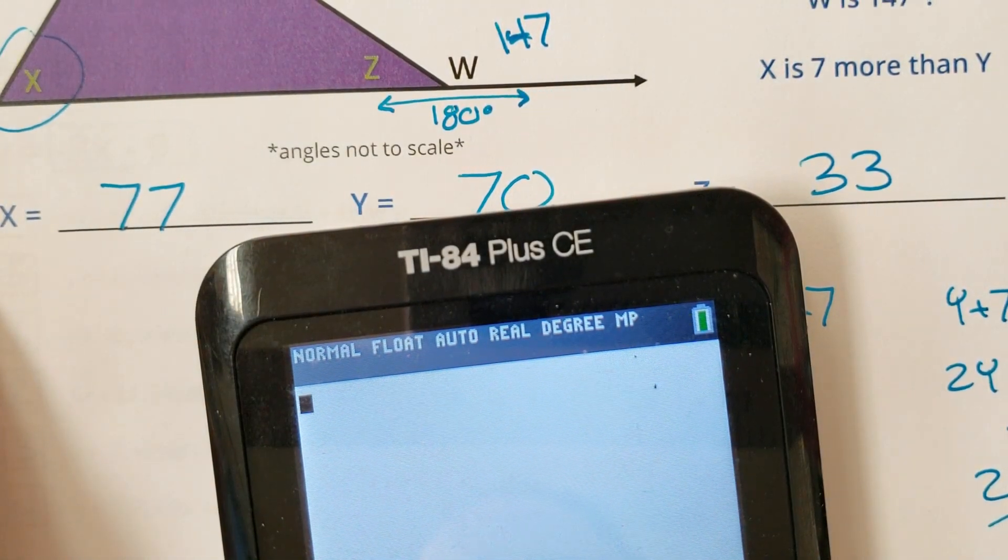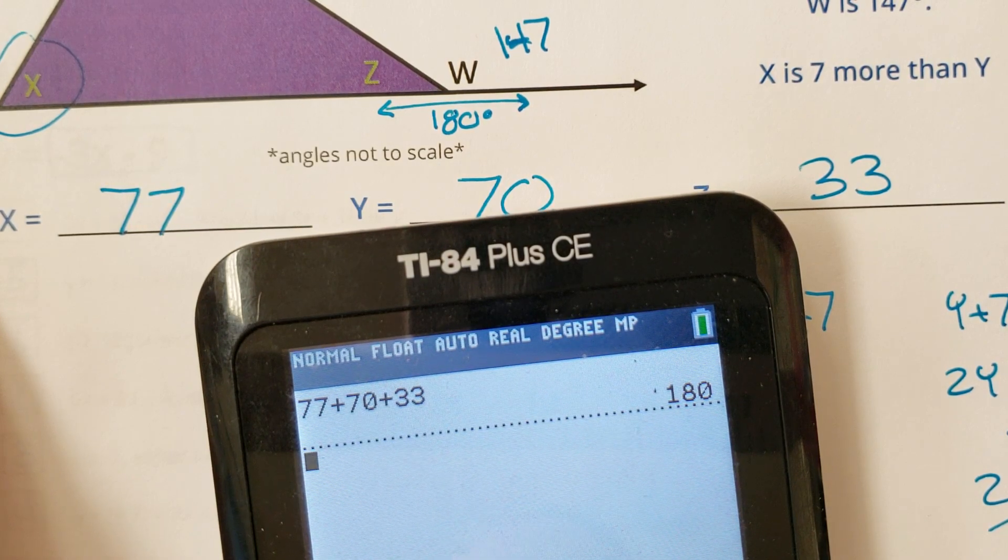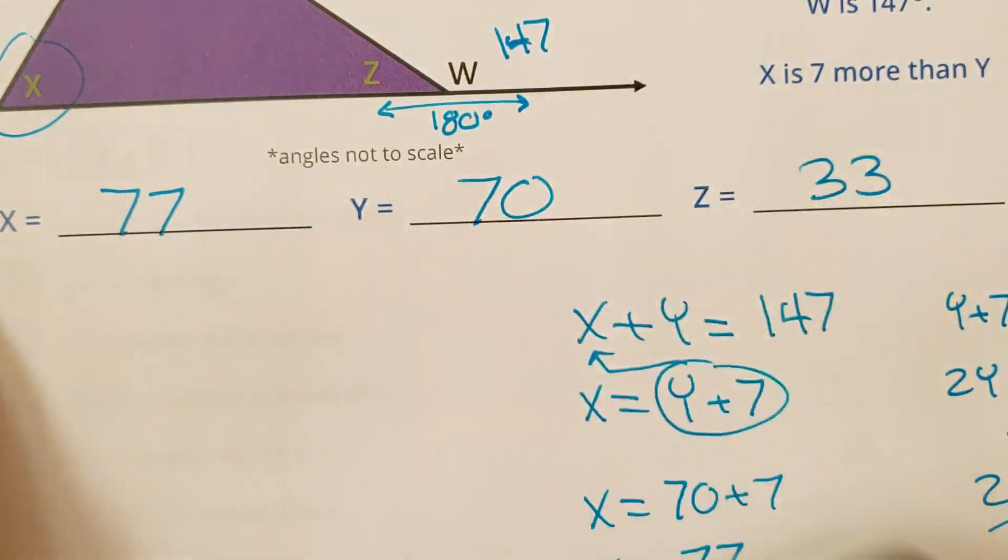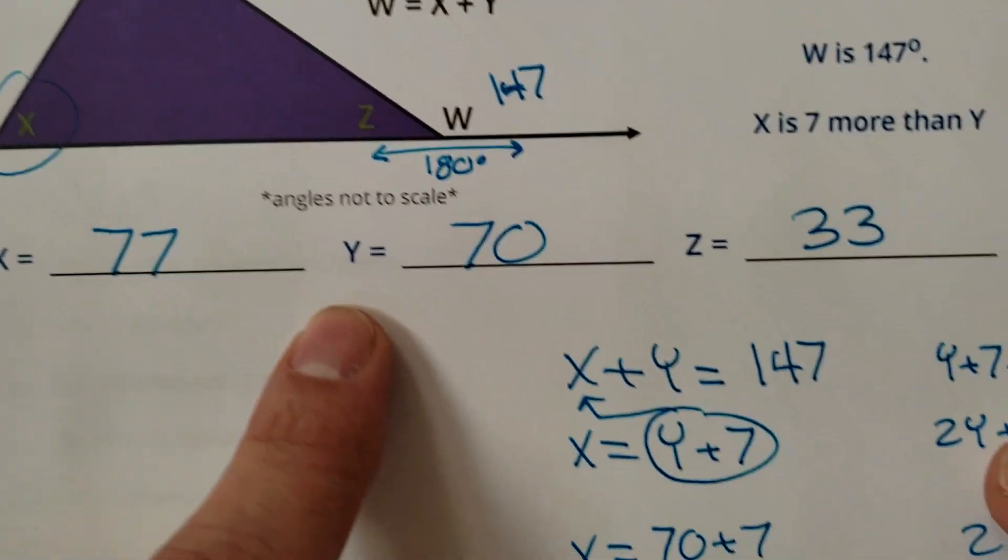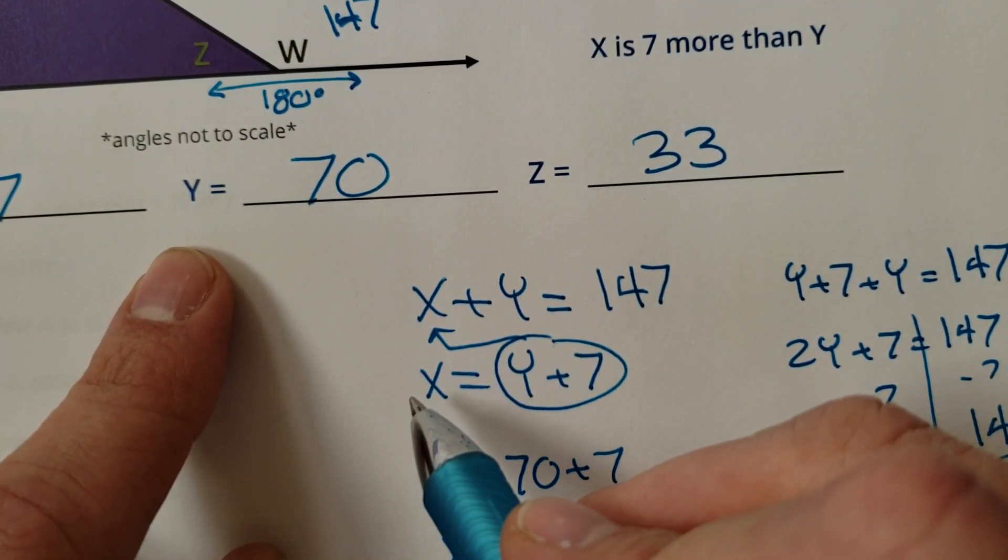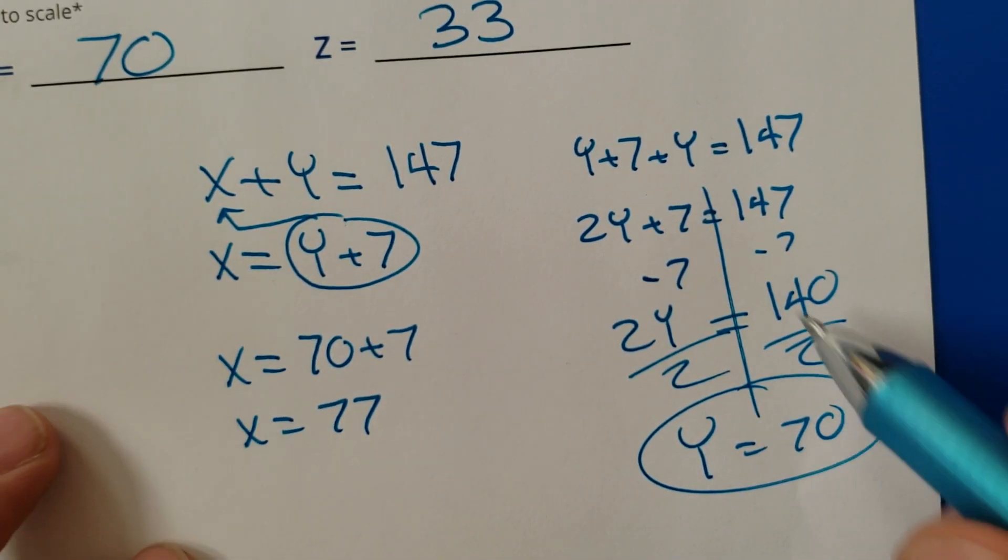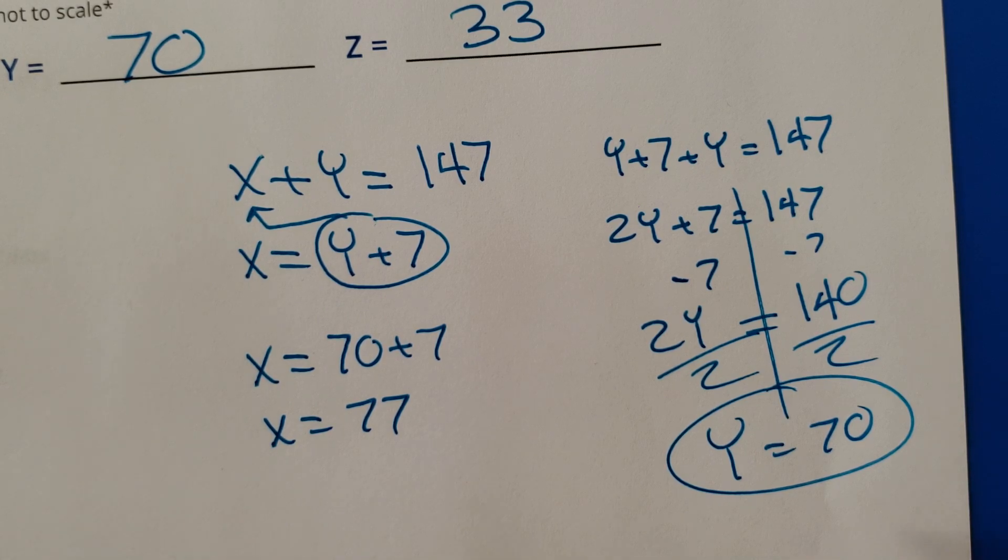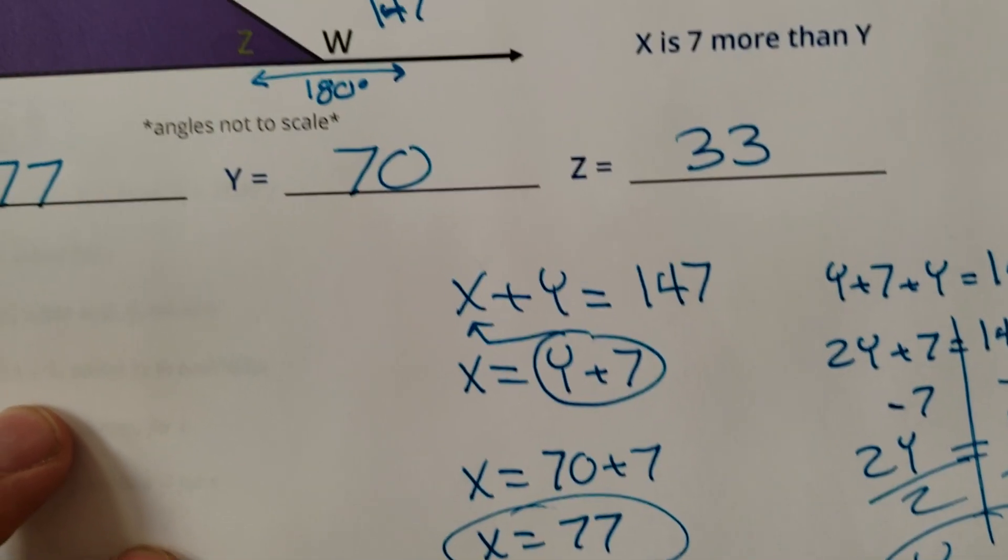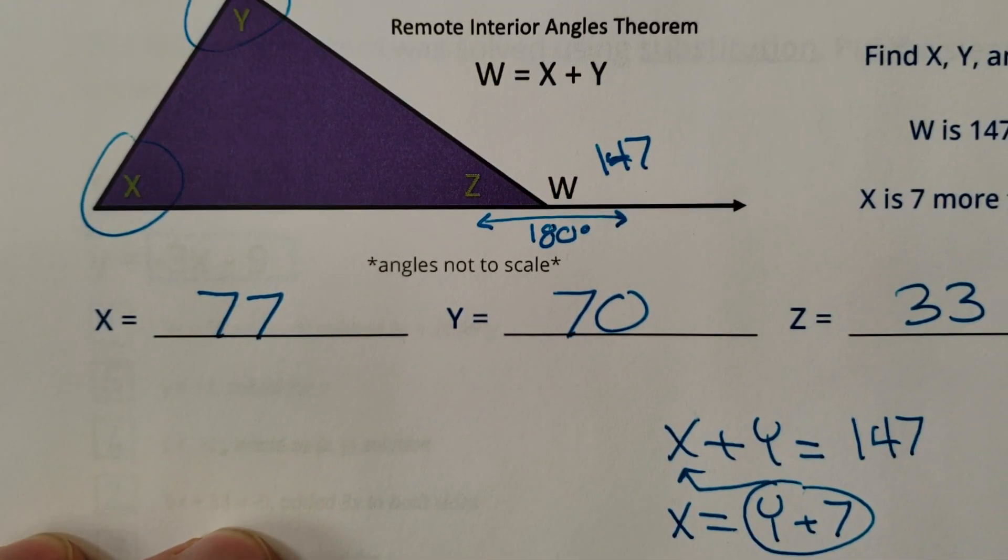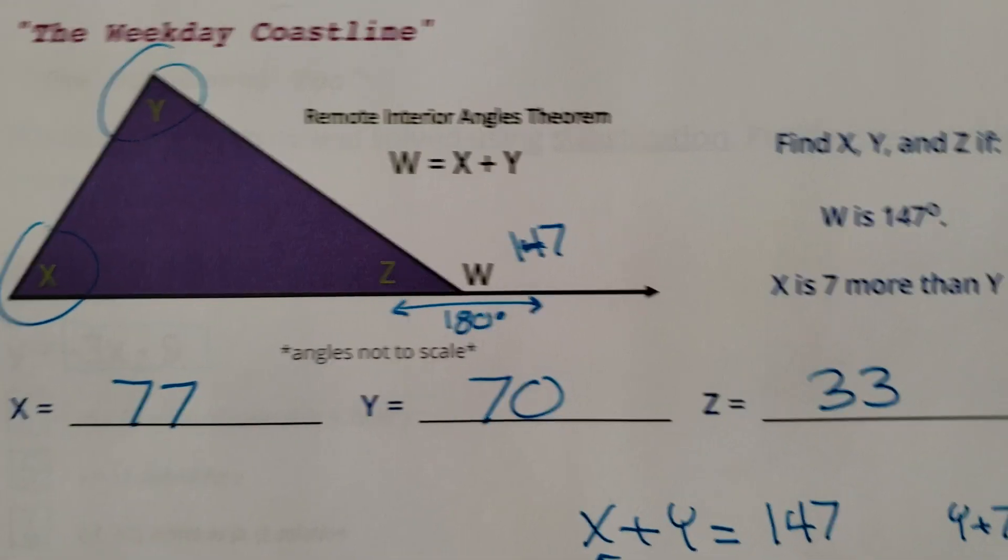Let's double check to make sure this all works here: 77 plus 70 plus 33, hey look at that, 180 degrees like a triangle should be. So again, I just made a system, X equals stuff, stuff goes in for X, one step, two steps. Once you have one of the variables, then the rest of it becomes pretty easy to figure out. That's it, that's the Weekday Coastline. Good luck with that one.